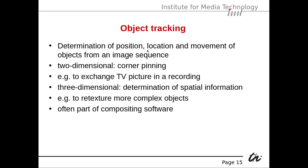Object tracking is the determination of position, location, and movement of objects from an image sequence. In two dimensions, this is corner pinning — following corners, for instance to exchange a TV picture in a recording. In three dimensions, it is the determination of spatial information, for instance to retexture more complex objects. It is often part of compositing software.